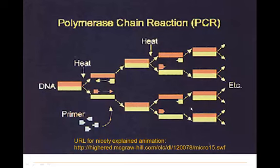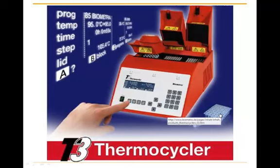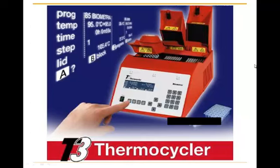I would strongly suggest copying and pasting the URL shown into your browser to watch the animation — it's very well explained. When Kary Mullis first did this, he did it by hand, heating it up manually. But now they have designed machines called thermocyclers in which the temperature goes up periodically and the needed chemicals are inserted at just the right time. So PCR has become very routine and very automated.